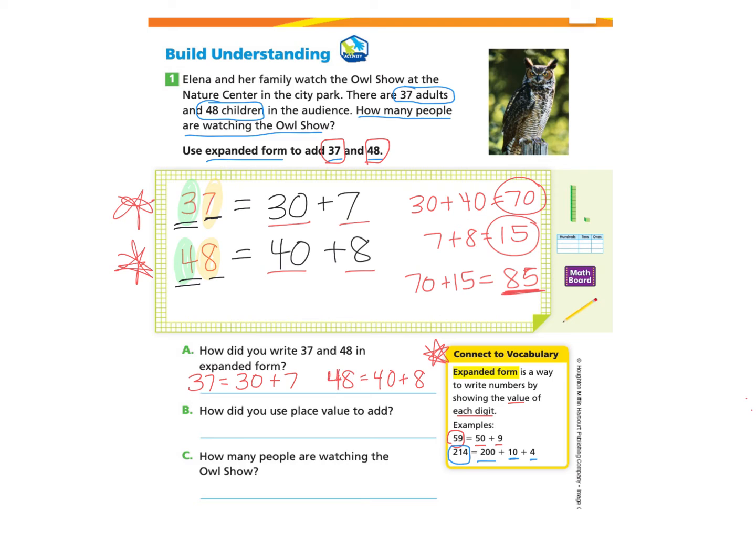Part B asks, how did you use place value to add? So we first added the tens when we were adding 30 plus 40 here. We added that first and then we added the ones column. So we can explain, I added the tens and then the ones.